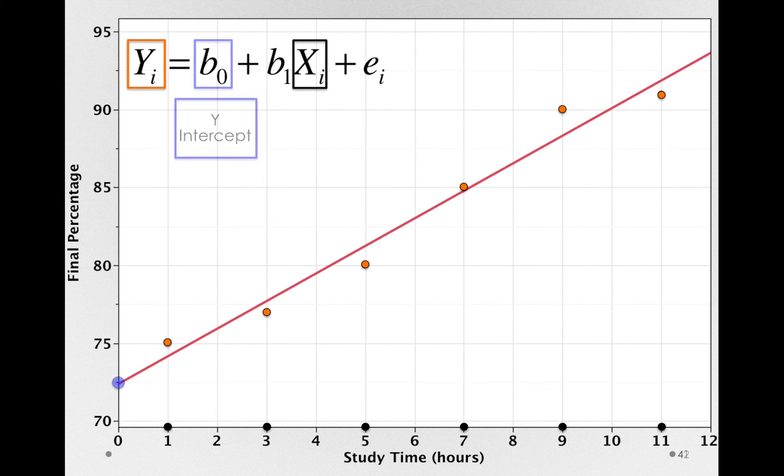Next, we have the y-intercept. This is where the line actually hits the y-axis. Notice that when X sub i is equal to 0, b sub 1 times X sub i will be 0. Anything multiplied by 0 is simply 0. So this model will predict when an individual has 0 of the actual x variable, the y-intercept. So again, just where this line will hit the y-axis.